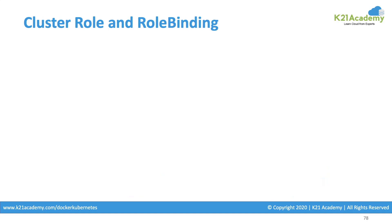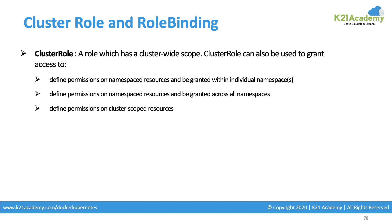A role or role binding is on the namespace level. If I want to give access at the entire cluster level — a reader access, editor access, ability to delete deployments or PVs, or grant permissions to other users — that is also a role at the cluster level. When we say cluster-level role, it has a wide, entire cluster-wide scope.